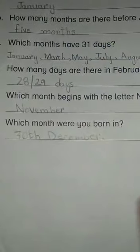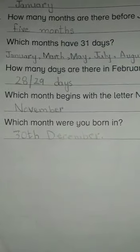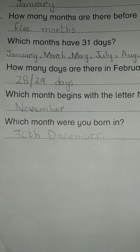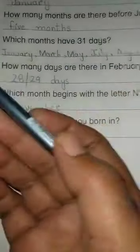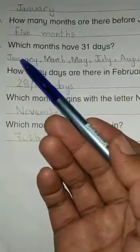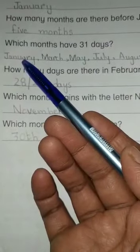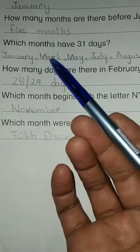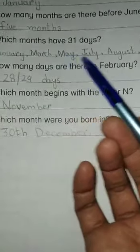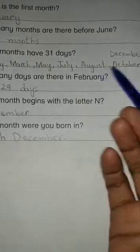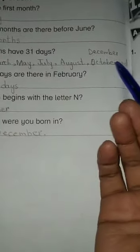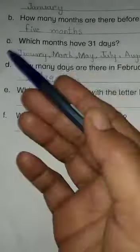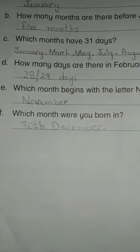Next question: which months have 31 days? We have to write the names of those months. The months having 31 days are January, March, May, July, August, October, and December.